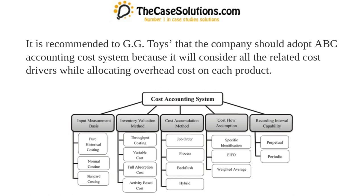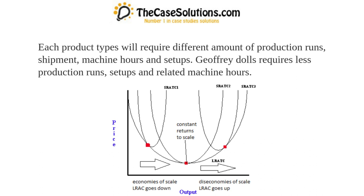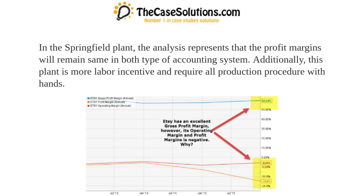It is recommended that GG Toys adopt the ABC accounting cost system because it considers all related cost drivers while allocating overhead cost to each product, determining the true picture of production price. This system also entails higher profit margins for standard products. Each product type requires different amounts of production runs, shipment machine hours, and setups — Jeffrey doll requires fewer production runs, setups, and machine hours.